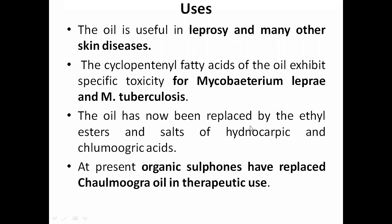The oil has now been replaced by the ethyl esters and salts of hydnocarpic and chalmogric acids. Nowadays, sulphone drugs have replaced Chalmogra oil in therapeutic use. In summary, Chalmogra oil is obtained from the seeds and covers two major diseases — leprosy and tuberculosis — which is why this drug remains important.